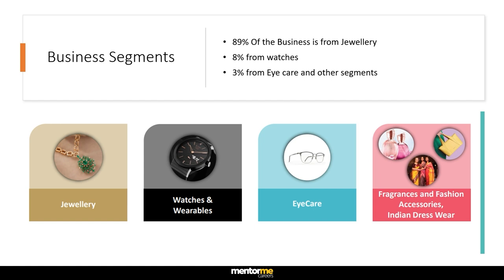Let's first understand the various business segments of Titan. We cannot build a financial model on Titan unless we understand what it's actually trying to do. At an overall level we can see there is some revenue bifurcation across various business segments, and majorly it's jewelry. But at the base level, what Titan is actually trying to do is get into unorganized spaces in India and gain a fair share by being an organized player and dominating those segments.